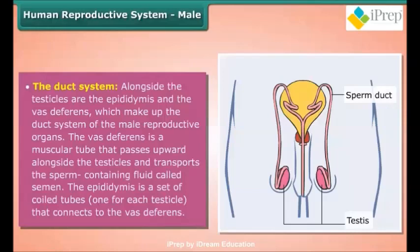The duct system: Alongside the testicles are the epididymis and the vas deferens, which make up the duct system of the male reproductive organs. The vas deferens is a muscular tube that passes upward alongside the testicles and transports the sperm-containing fluid called semen. The epididymis is a set of coiled tubes, one for each testicle, that connects to the vas deferens.